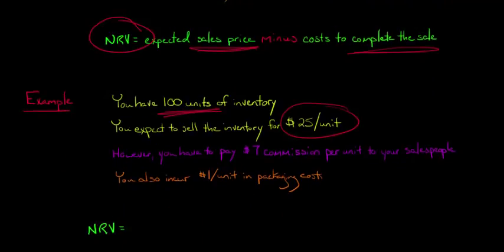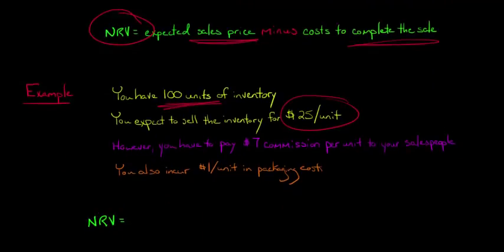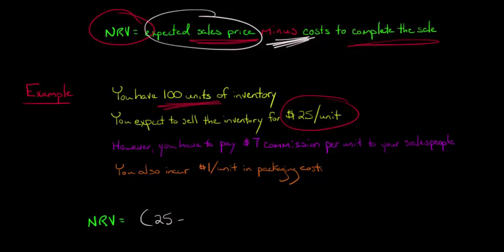So now let's go ahead and calculate our net realizable value. So we're just going to take, again, this expected sales price, which in this case is $25. Let's put parentheses here because we're going to have a lot. So $25, and then we subtract, we're going to subtract out the cost to complete the sale. So we've got this $7 commission, so it's minus 7. And then we've also got this $1 per unit in packaging costs, so minus 1.